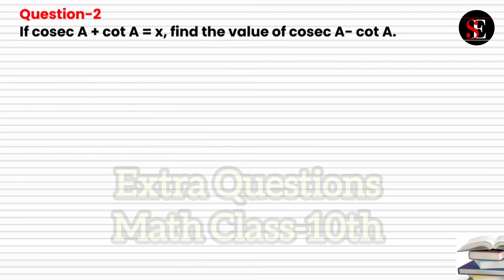Question number 2: If cosec A + cot A = x, find the value of cosec A − cot A. Here the sum of cosec A and cot A is given and the difference is to be found. There is a known relation: cosec²A − cot²A = 1, which means cosec A − cot A = 1/(cosec A + cot A). We will use this identity to solve.